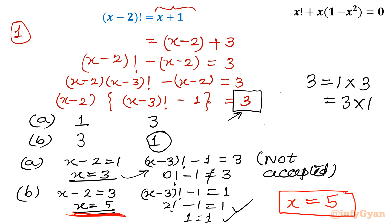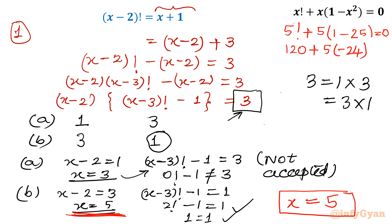If you want to verify: 5 factorial plus 5 times (1 minus 25) — since 5 squared is 25 — should equal 0. So 5 factorial plus 5 minus 24 times 5: 5 factorial is 120, plus 5 minus 120 — since 24 times 5 is 120 — equals 0. That means it is true.